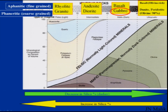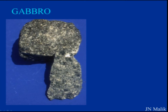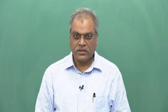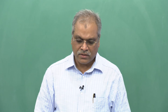We have felsic and mafic. Gabbro is comparatively darker in color; its composition includes plagioclase feldspar and darker amphiboles. The percentage of silica reduces here whereas iron-magnesium minerals increase.